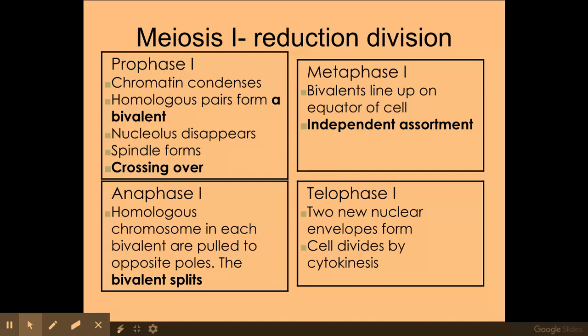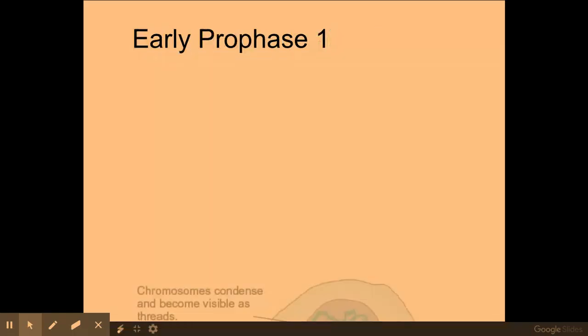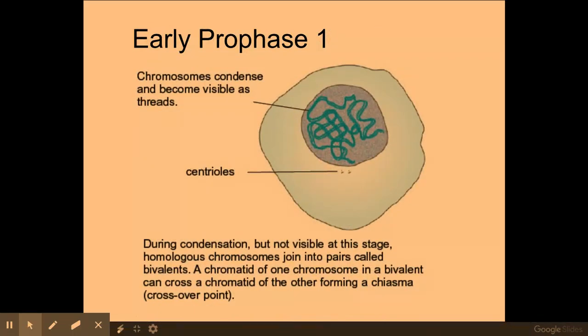We'll go over each stage. The first stage is prophase one. Early in prophase one, my chromosomes will start to become more condensed by coiling around those histones, and the centrioles will move to the poles of the cell and the spindle fibers will start to form from them.